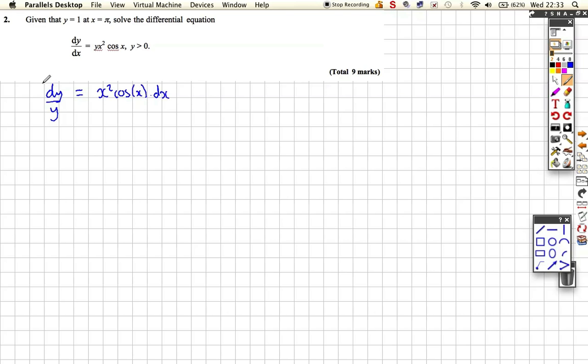So we can actually now integrate. If we integrate both sides, I've got to find the integral of 1 over y dy, and I've got to find the integral of x squared cos x dx.